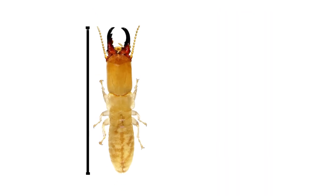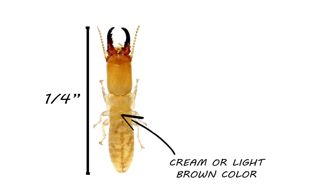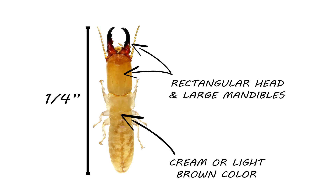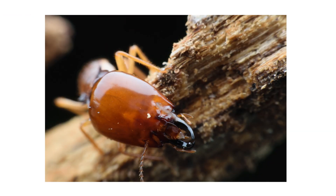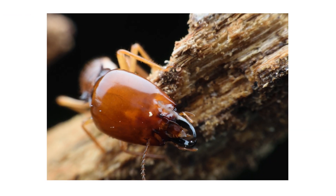Soldiers are around a fourth of an inch long and typically a cream or light brown color. They're easily identified by their large rectangular head and mandibles, and they protect the colony.